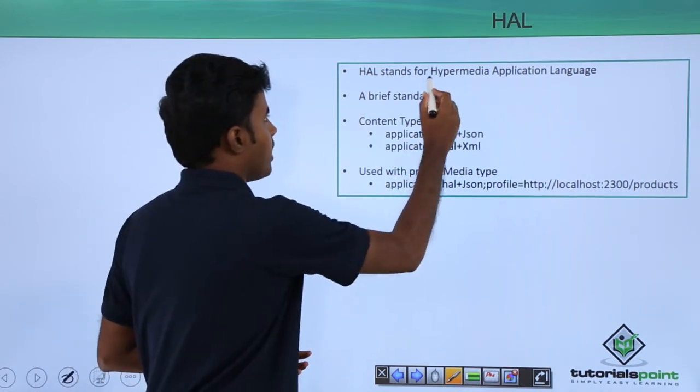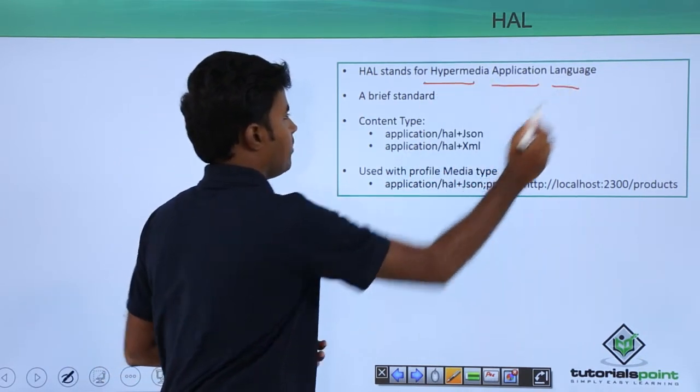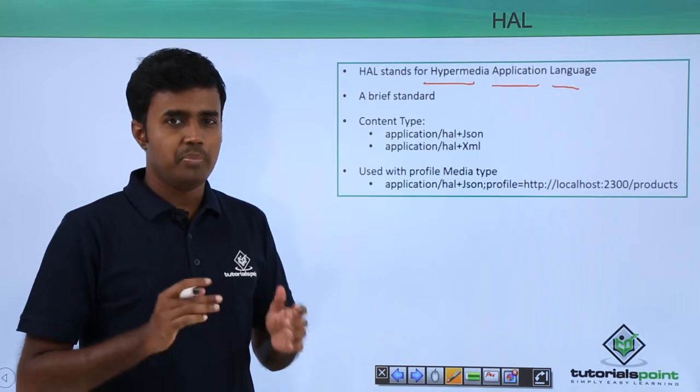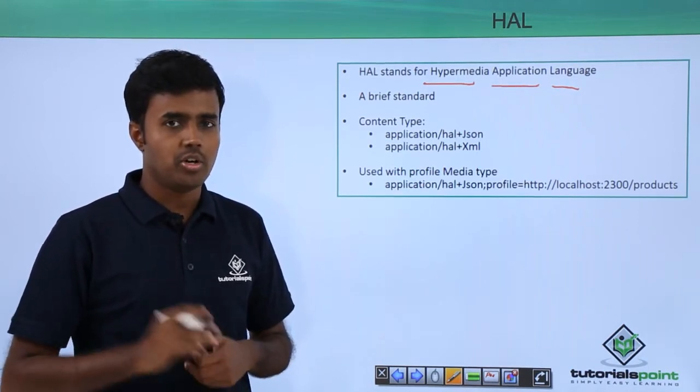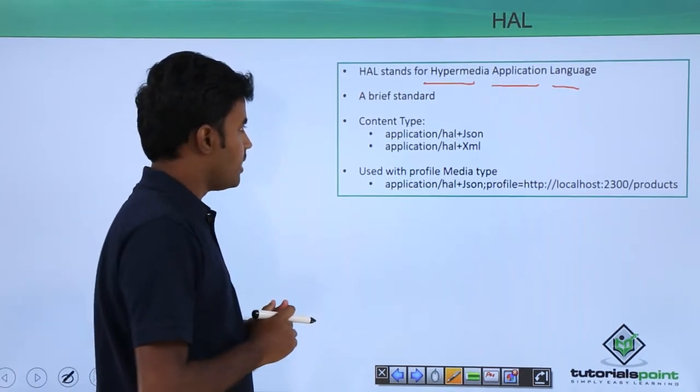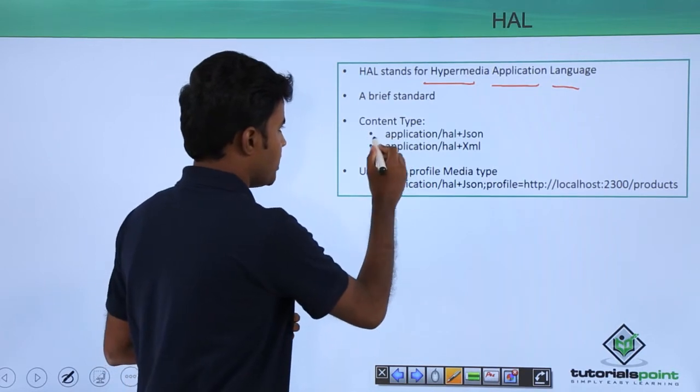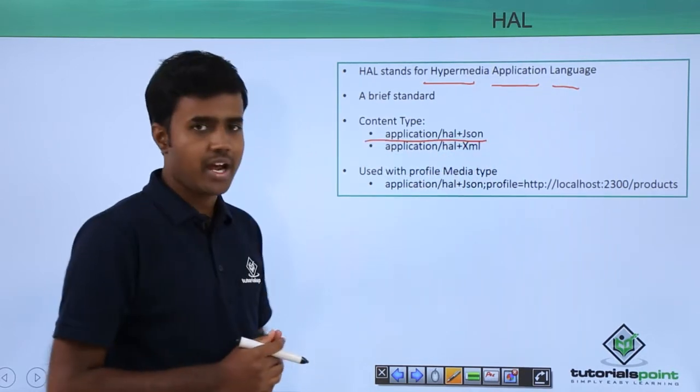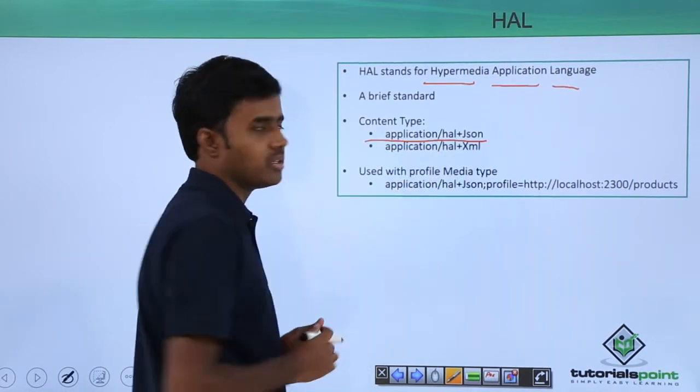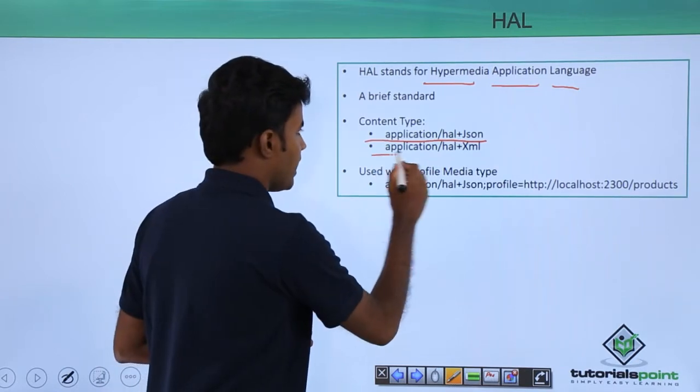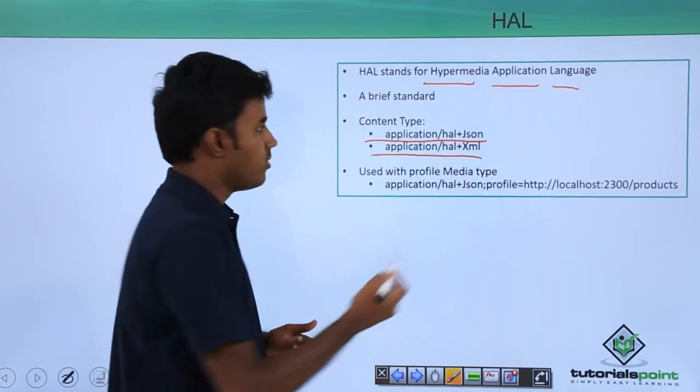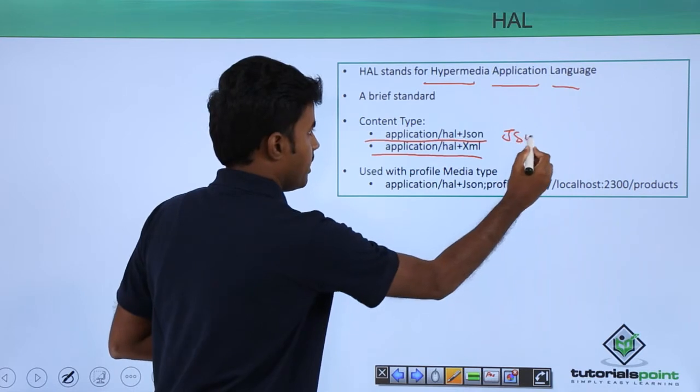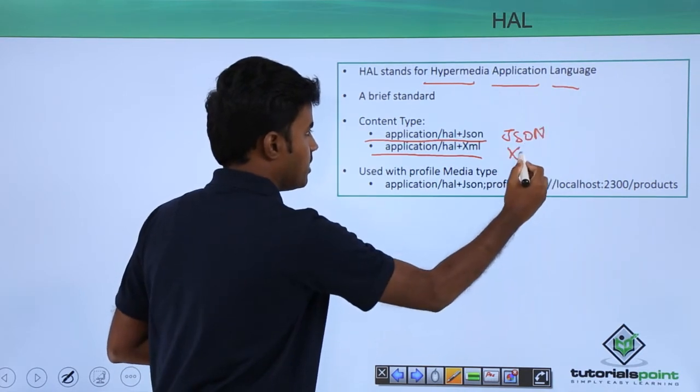HAL stands for Hypermedia Application Language, which is a very brief standard compared to CollectionPlus JSON. The content types are generally application/hal+json or application/hal+xml for JSON and XML types respectively.